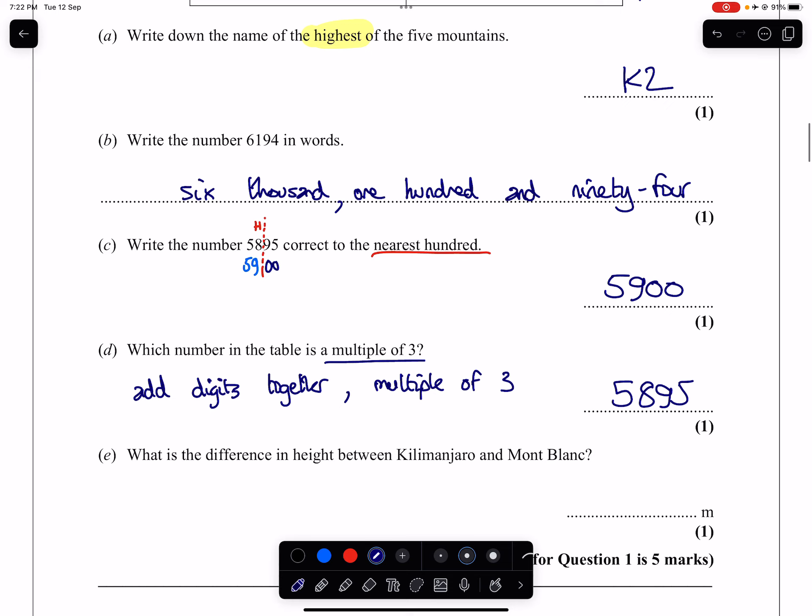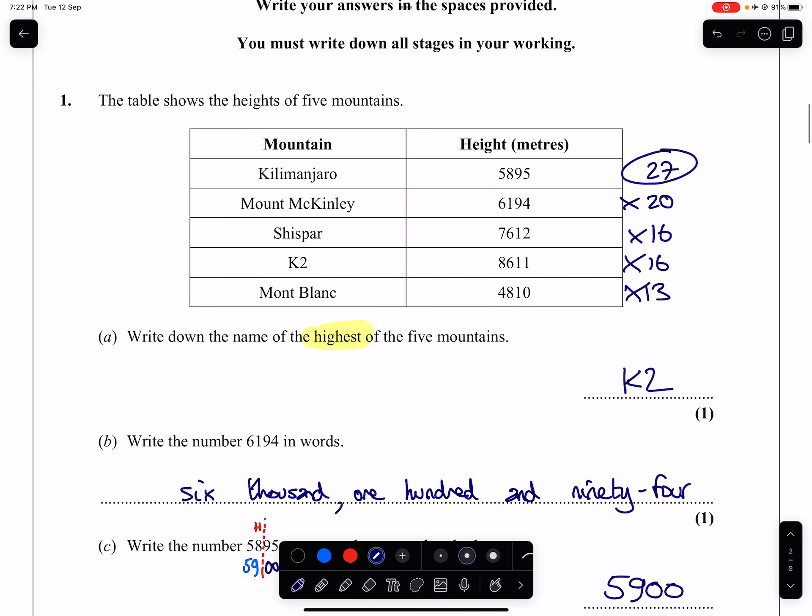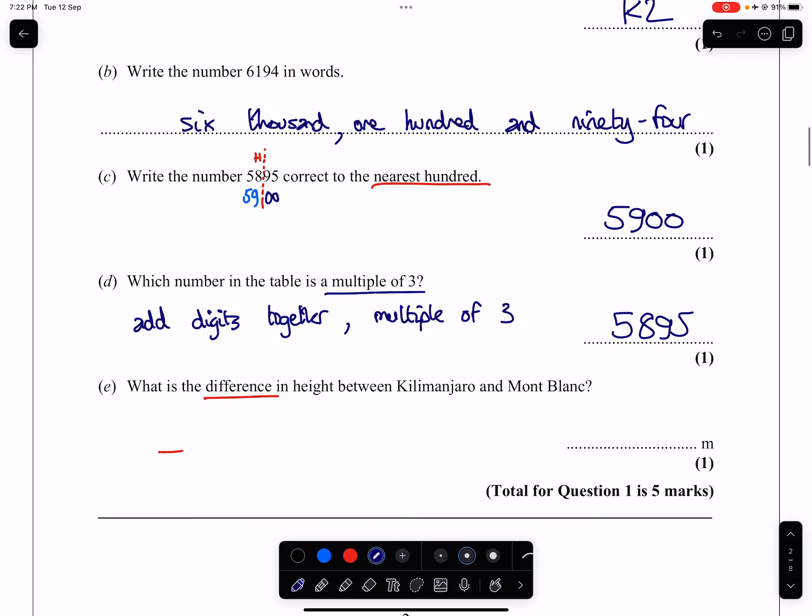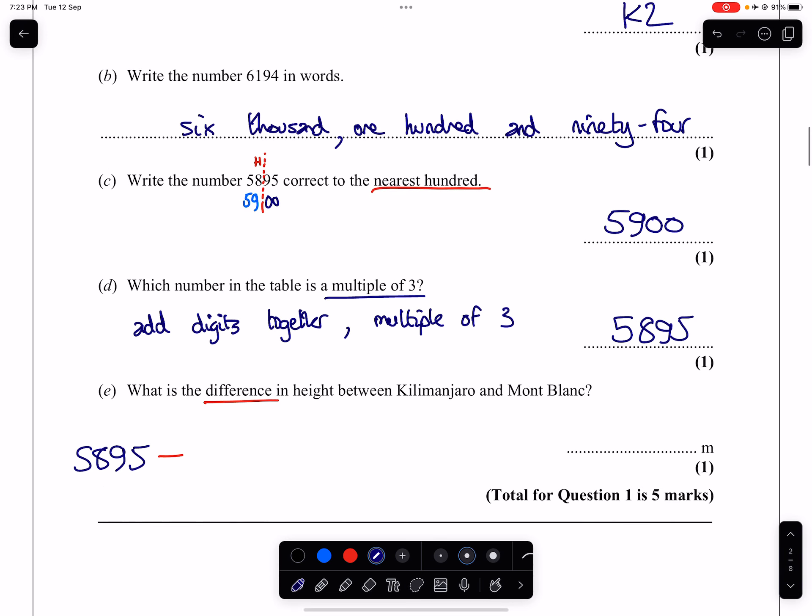Part E. What is the difference in height, difference being a takeaway sum, between the height of Kilimanjaro and Mont Blanc. Kilimanjaro, 5,895 and Mont Blanc, 4,810. And when we take those away from each other, we're going to get 1,085. Done.